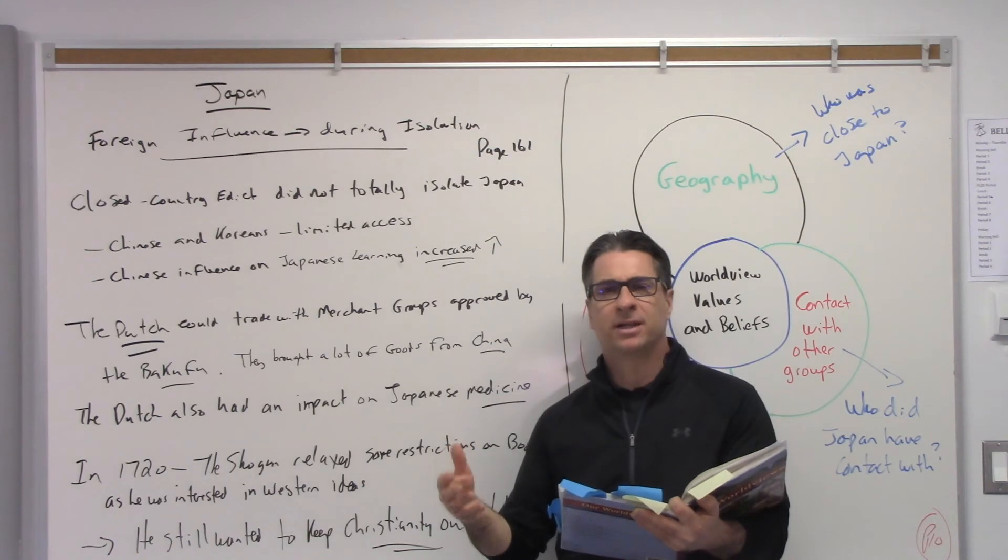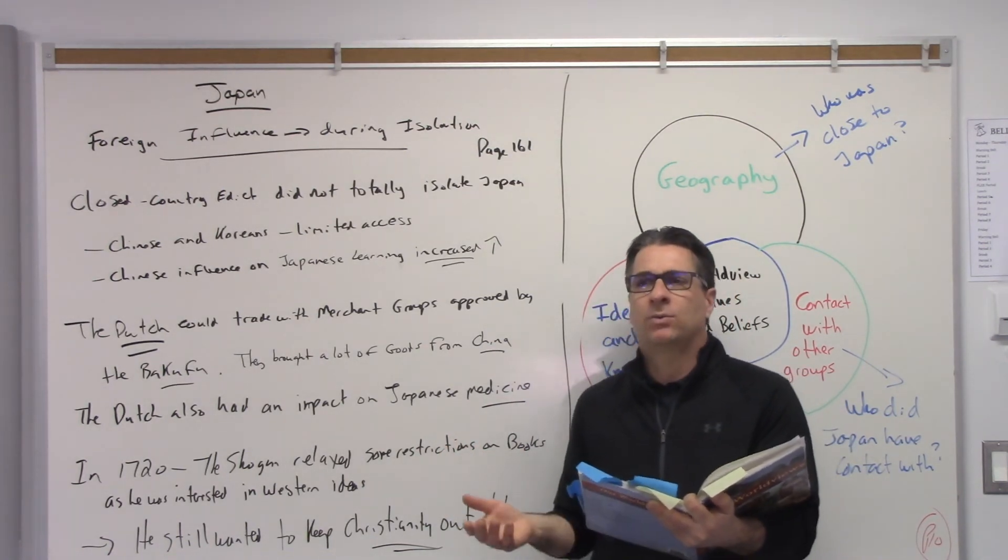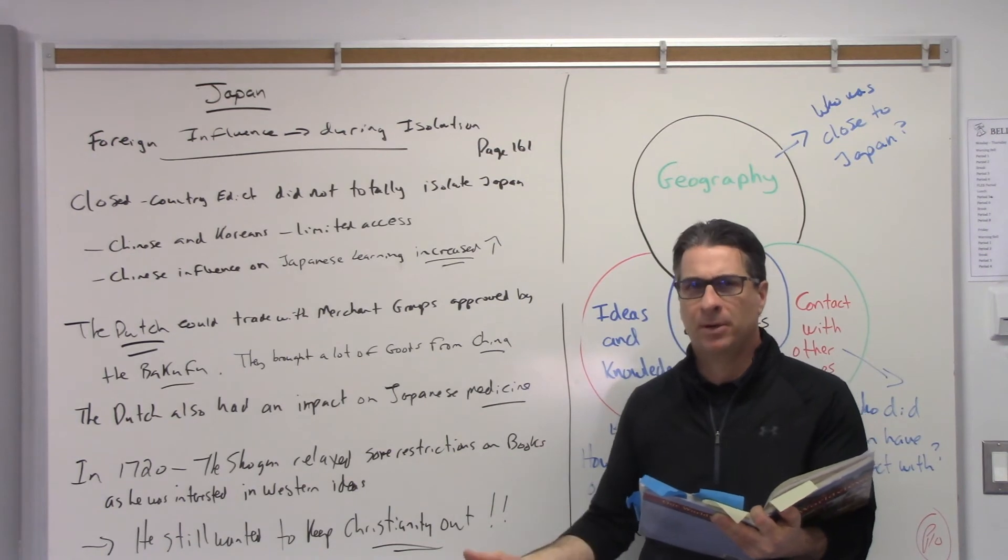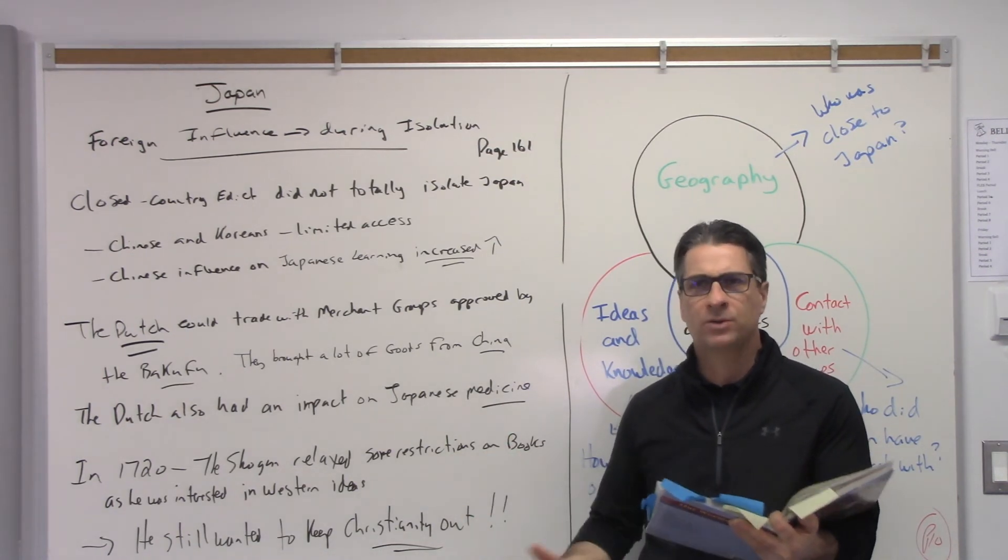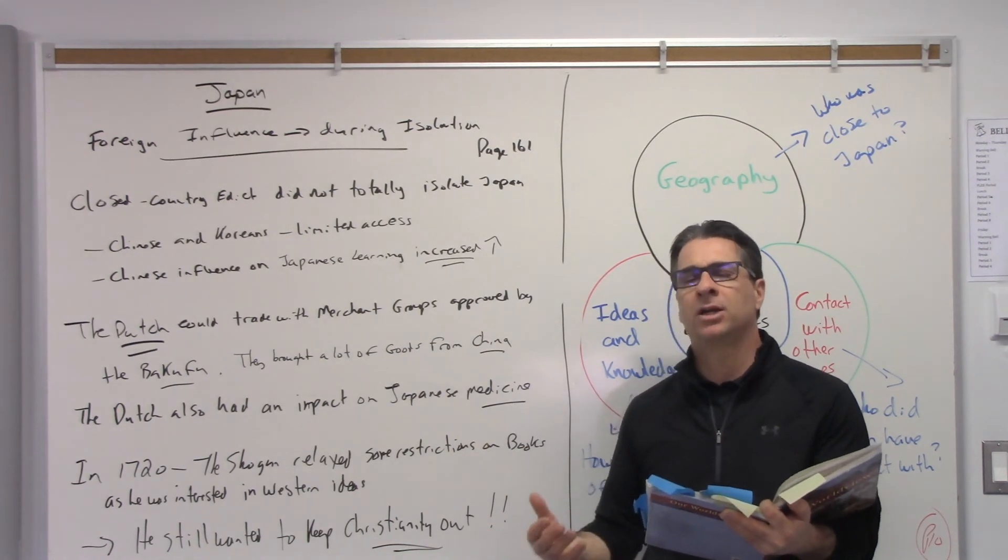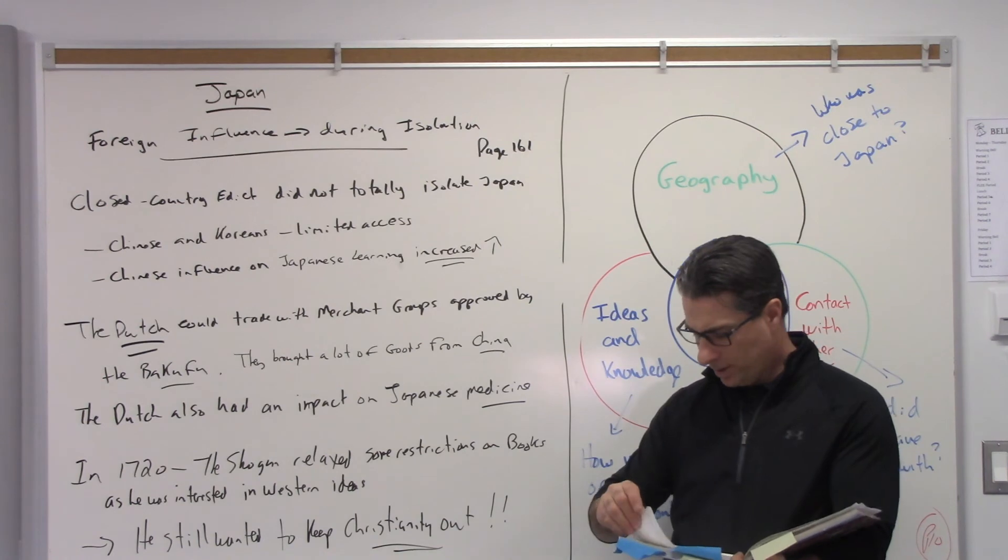He'd heard about the different countries, obviously, when the Englishman washed up on his shore. He was like, well, what else is out there? He asked him about it. He learned about England and Portugal and Spain more and how they were close to each other, what was around. So he wanted knowledge to be prepared. So read 161.